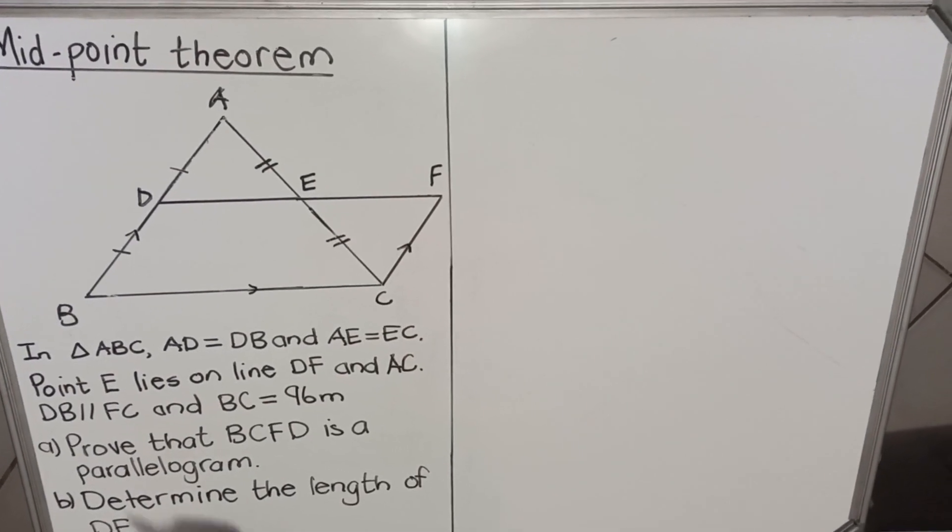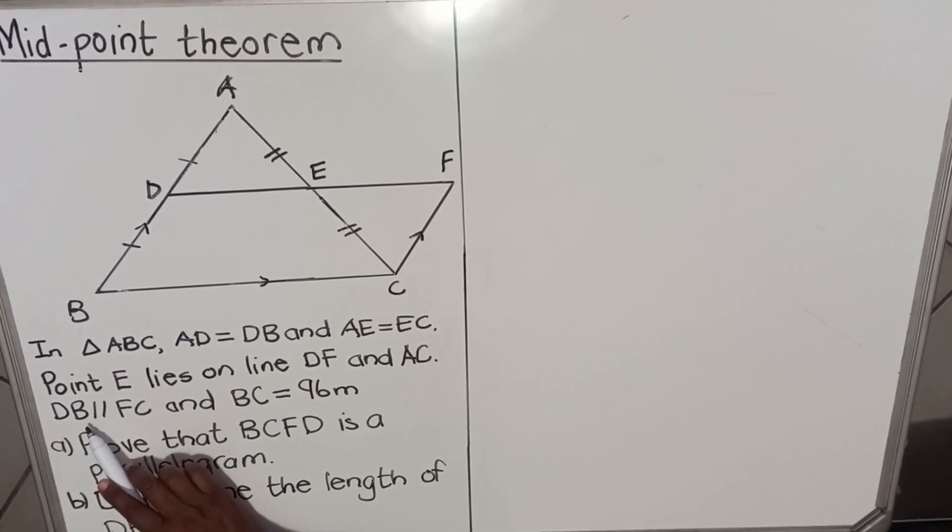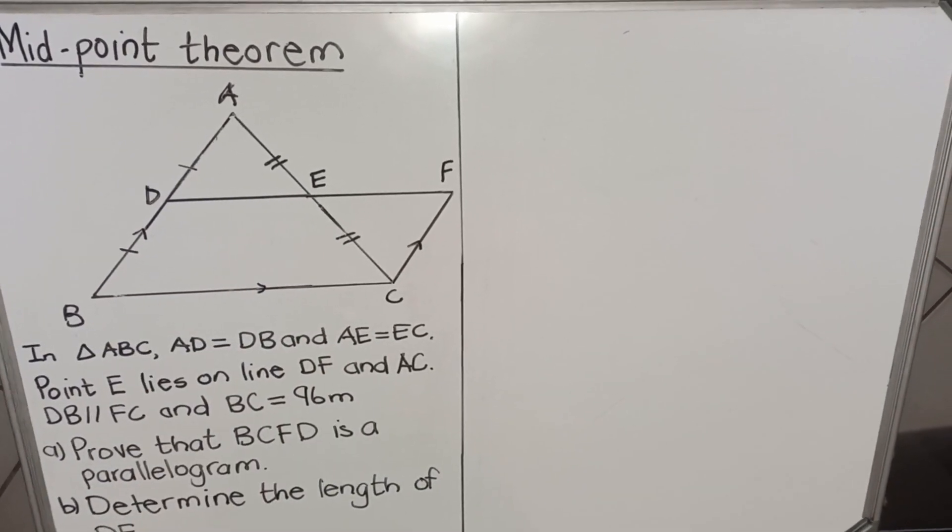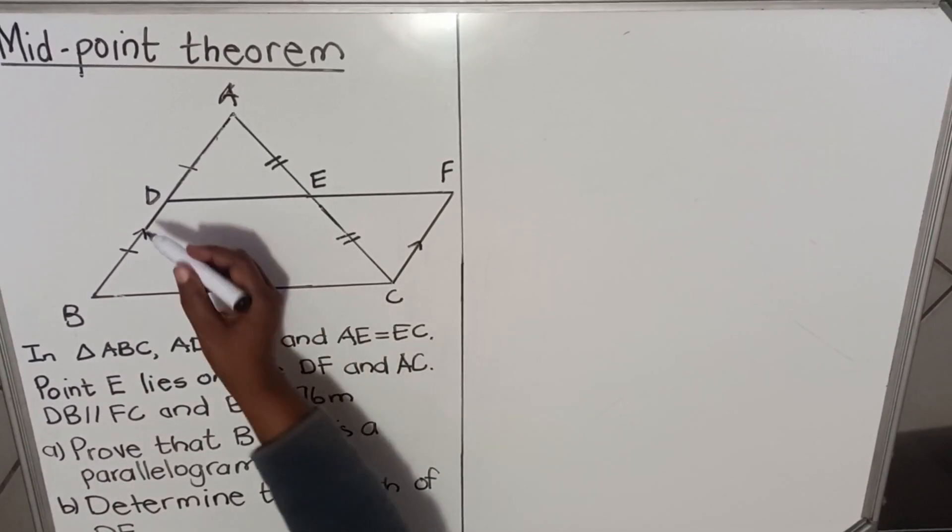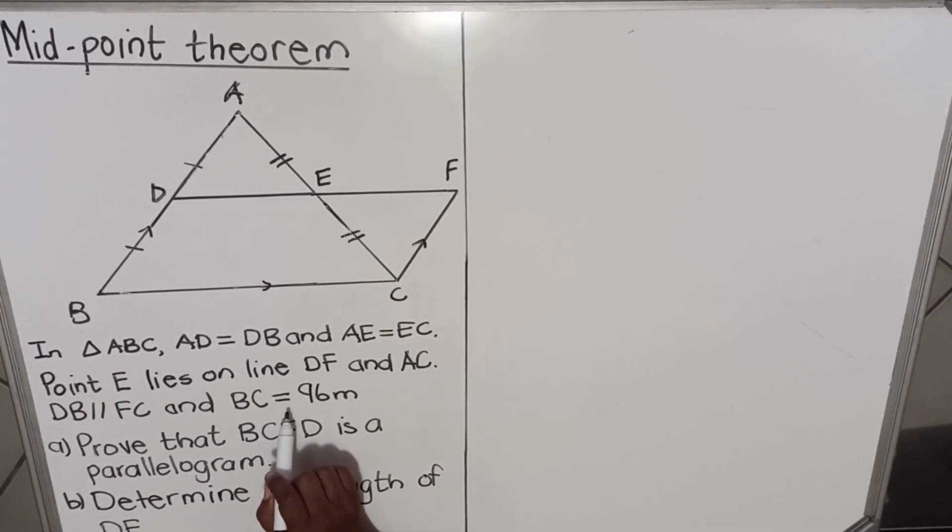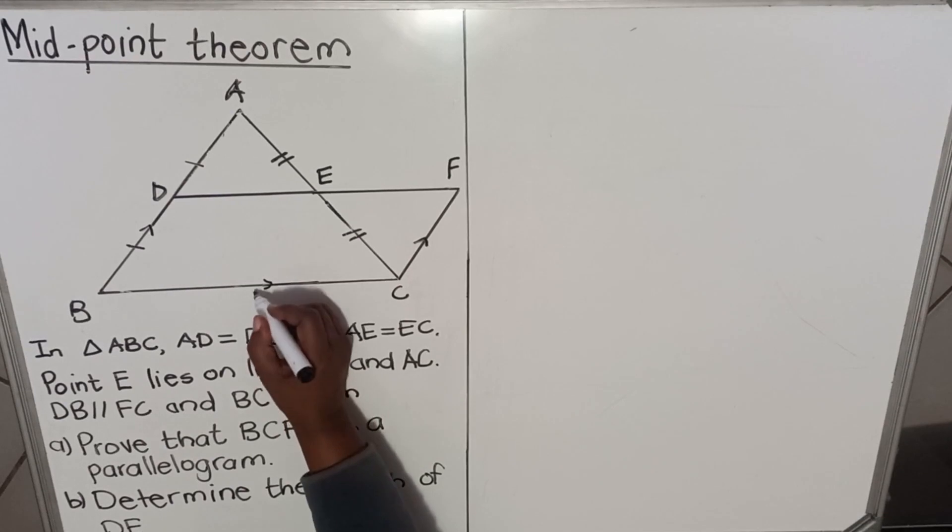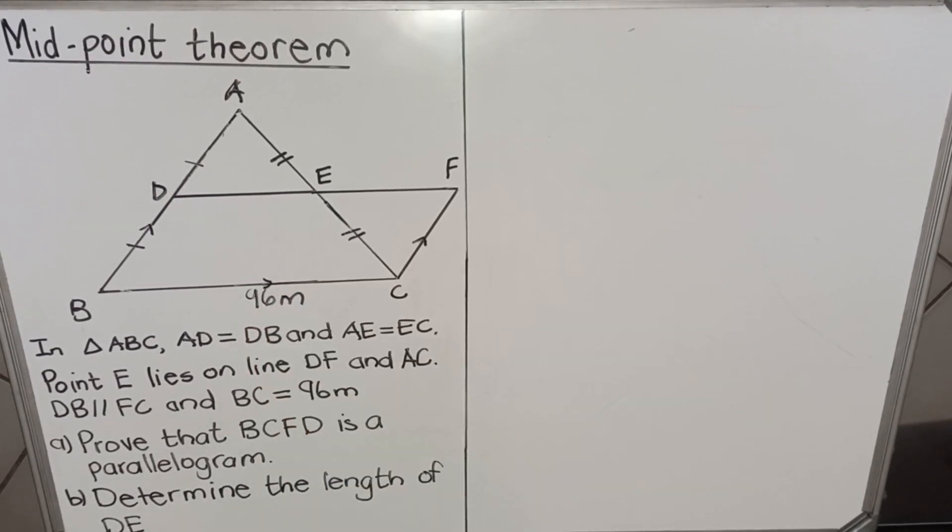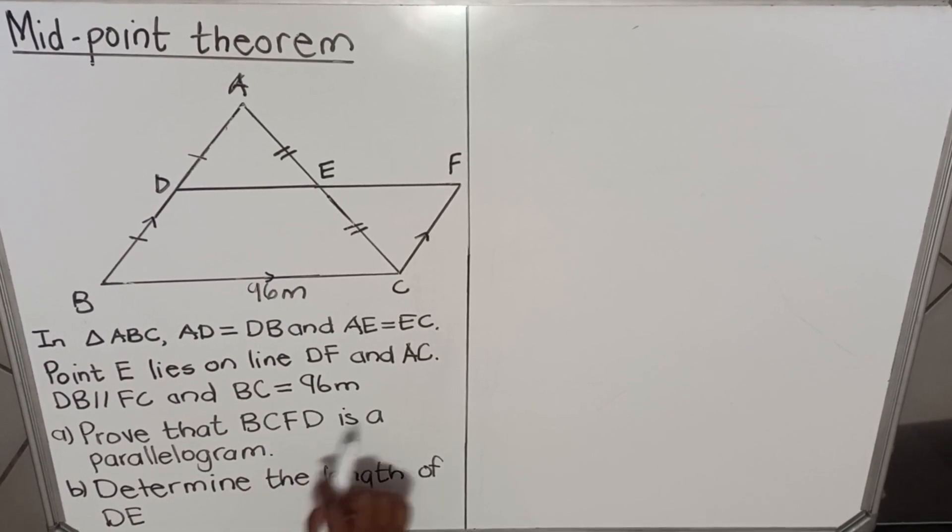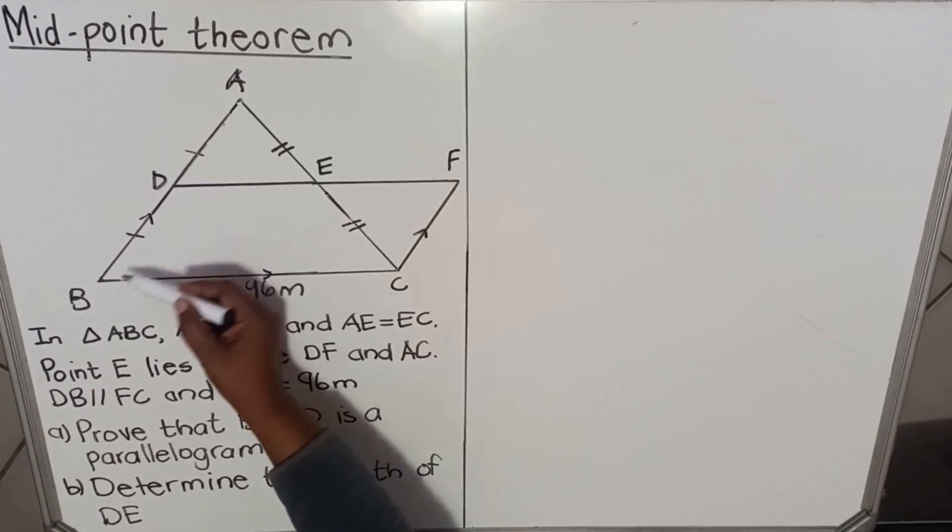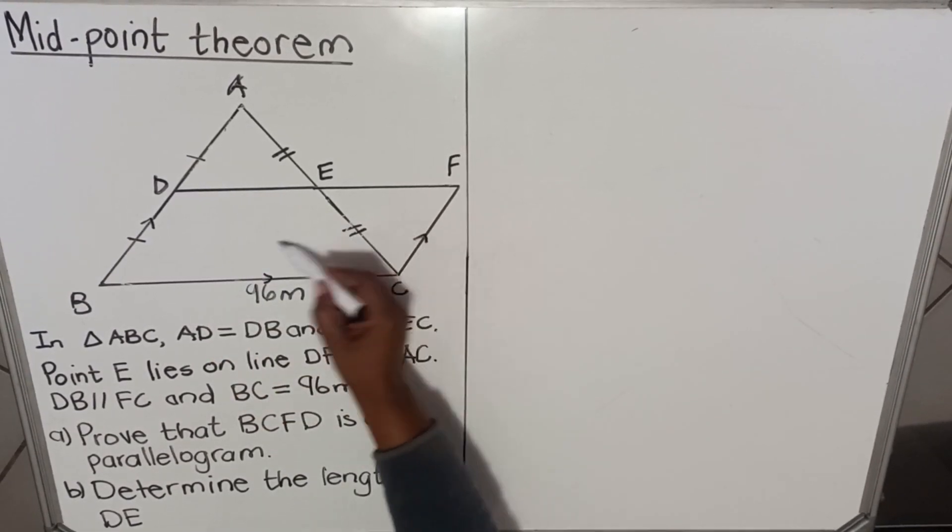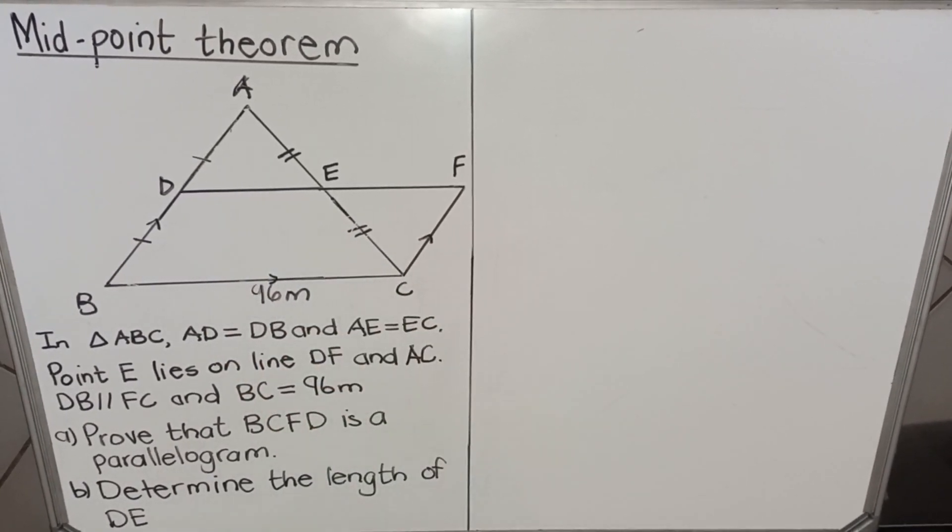And then they're given that DB is parallel to FC. This line is parallel to FC. DB, this one, parallel to FC. And BC is equal to 96 meters. BC is 96. Then the question says: prove that BCFD is a parallelogram. BCFD, this one, this one here is a parallelogram.